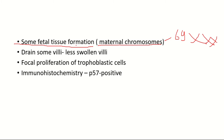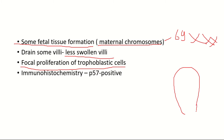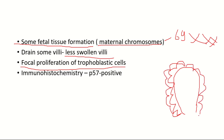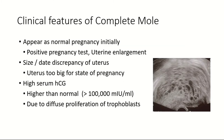Because fetal tissues are present in partial mole, they drain fluid from the villi, so the villi appear less swollen compared to complete mole. There is only focal proliferation of the trophoblastic cells — proliferating on only one side — whereas complete mole has diffuse circumferential proliferation. On immunohistochemistry, p57 protein staining comes back positive because maternal chromosomes are present in partial mole.